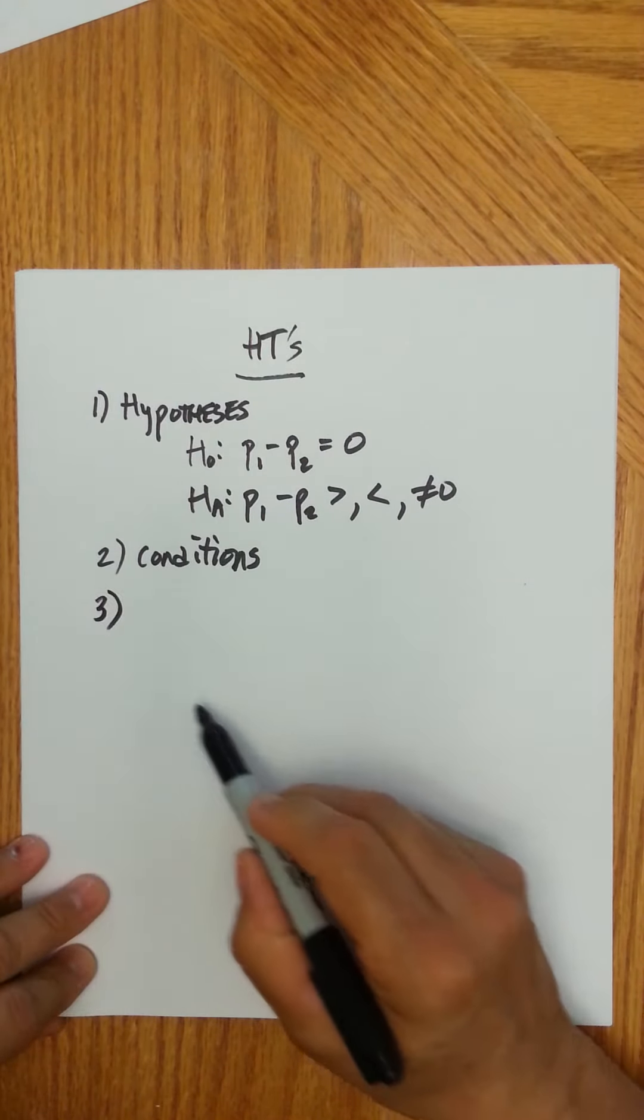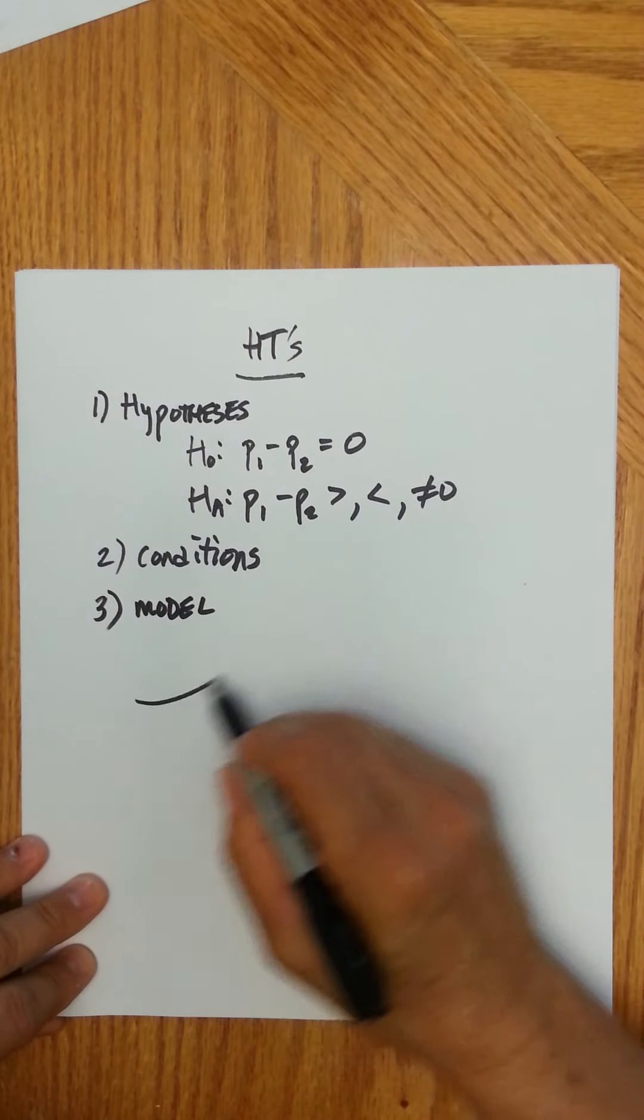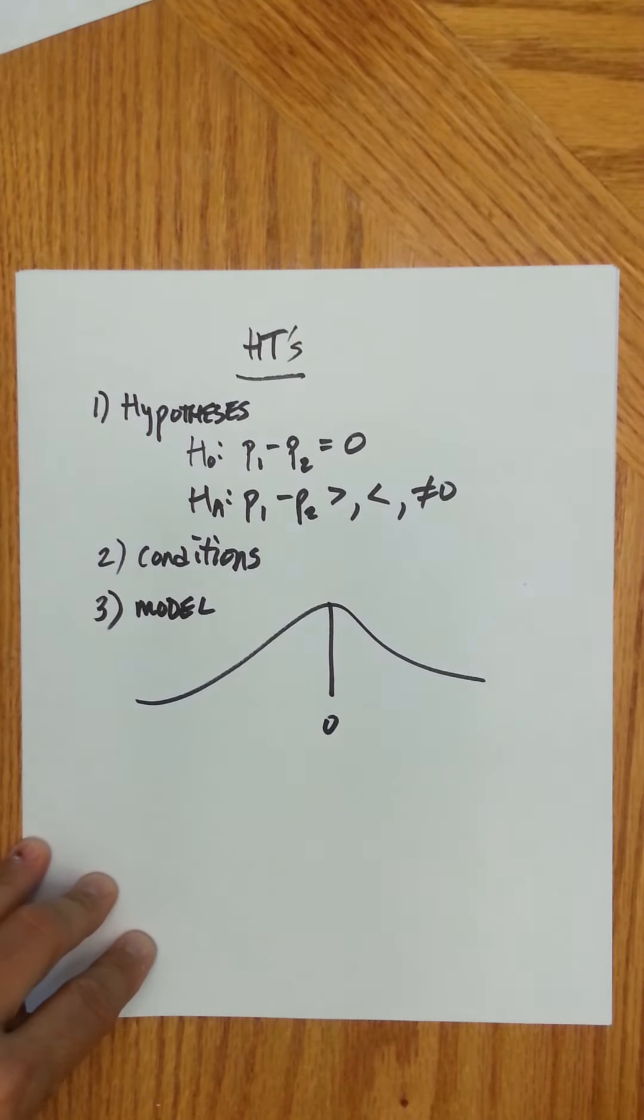Now, your model then, though, is a little different in that, in the center is always zero. That's your null. You're assuming the two groups have the trait at the same rate and so therefore the difference is zero or they're the same.